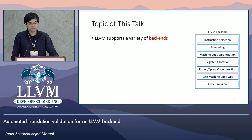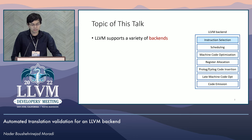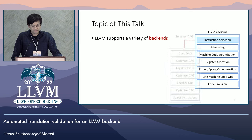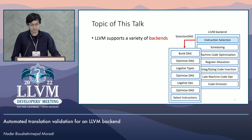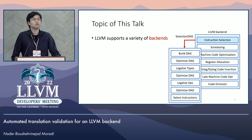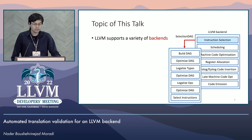The input IR goes through different stages and different intermediate representations until code is emitted. For example, instruction selection converts the input LLVM IR into target-specific machine instructions. The figure here shows instruction selection via selection DAG. Another instruction selector is Global iSel. In selection DAG, before conversion to machine instructions, the LLVM IR is converted to a DAG which goes through several stages, including optimizations, before being converted to a sequence of machine instructions. Later stages perform more optimizations until machine code is emitted.